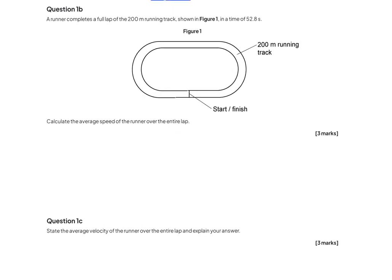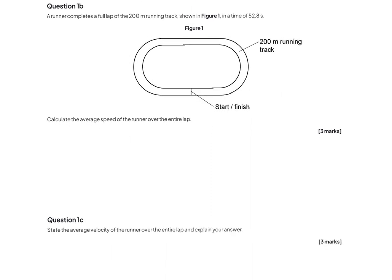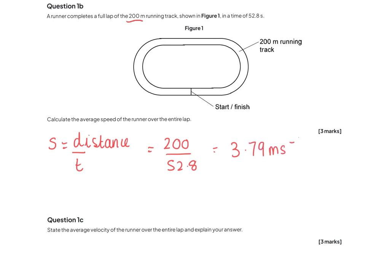Question 1b. A runner completes a full lap of the running track shown in figure 1 in a time of 52.8 seconds. Calculate the average speed of the runner across the entire track. The equation for speed is distance divided by time — that's distance, not displacement, because speed is a scalar quantity. His distance is 200 metres and the time taken is 52.8 seconds, so you get 3.79 metres per second, written as ms⁻¹ at A level.